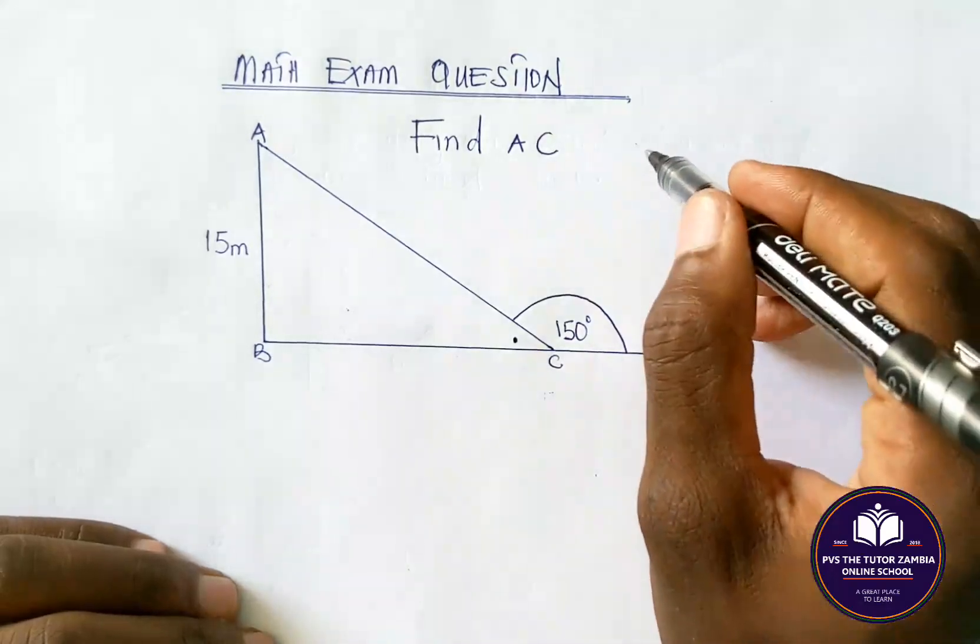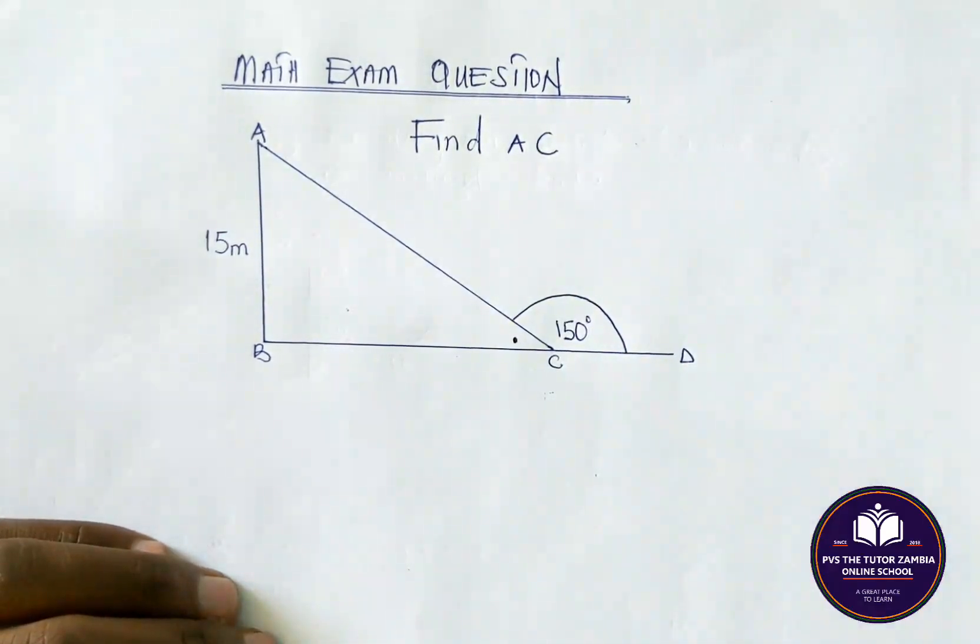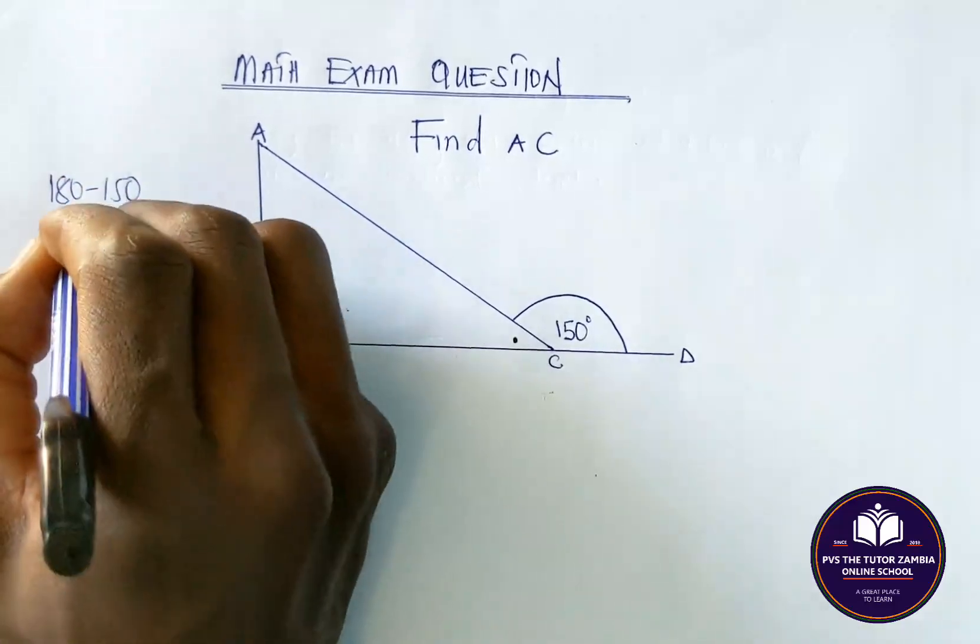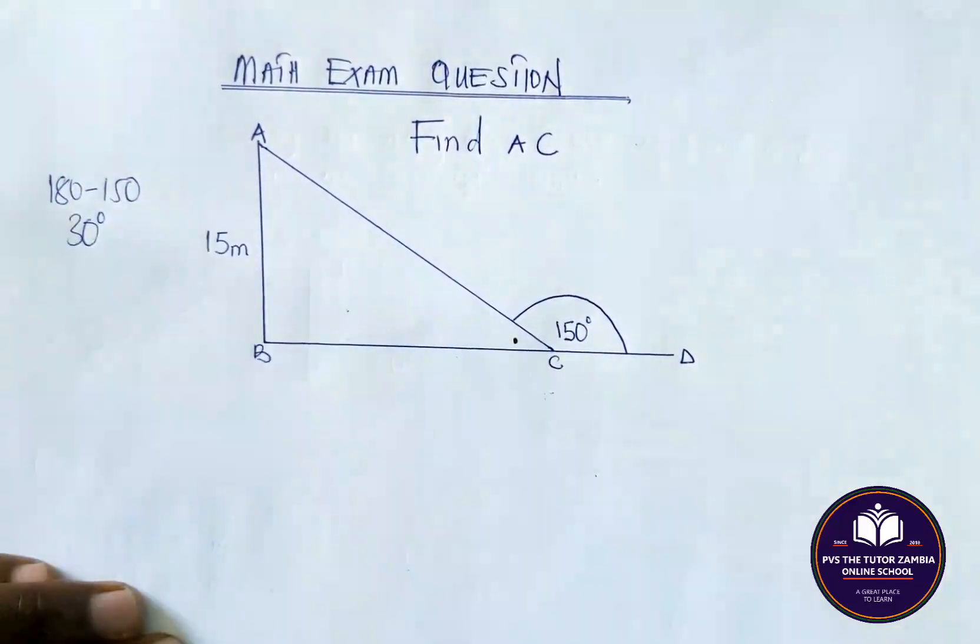Now from 180, we know that 180 minus 150 gives us what? 30 degrees.